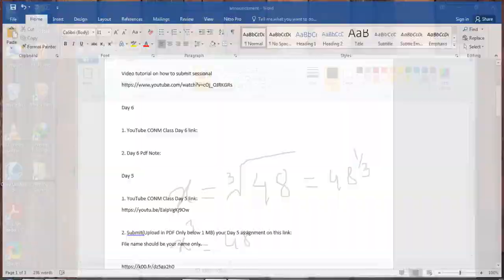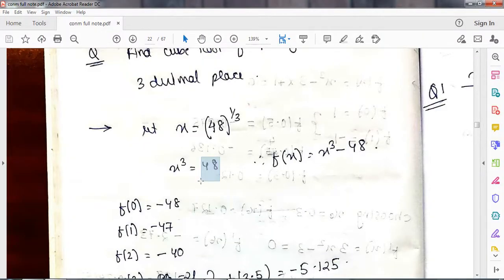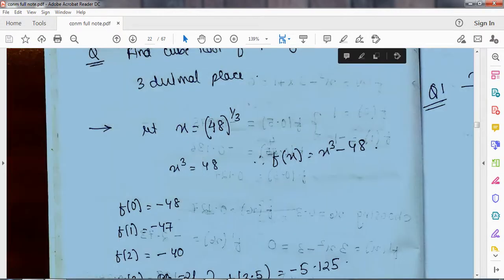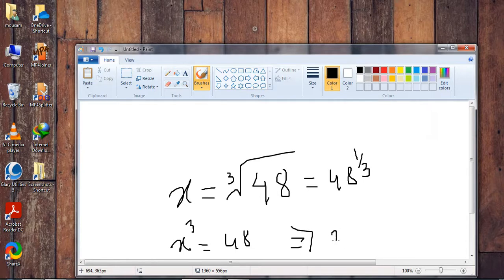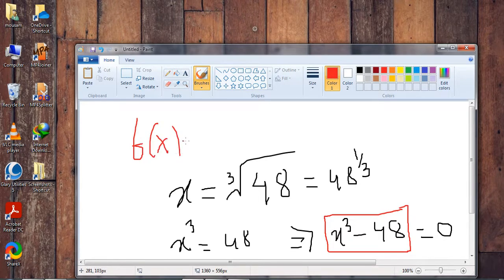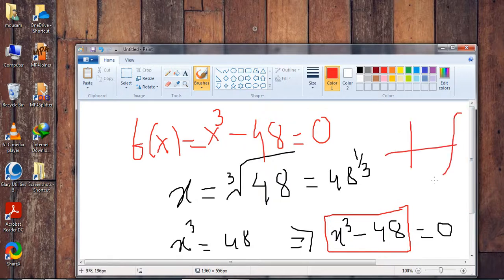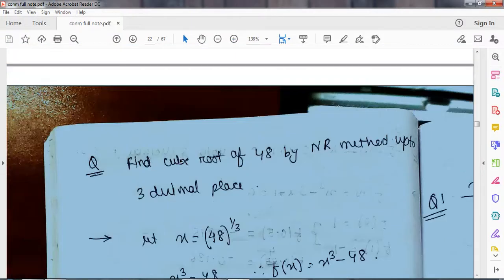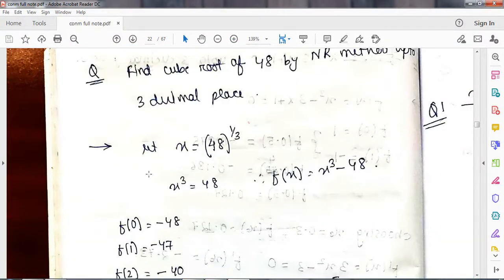Now what I have done, as I have told you, I have brought this 48 to the left hand side. So what I have done is that I have made x cube minus 48 is equal to 0. And I am telling you that this x cube minus 48 is my equation. So f of x is x cube minus 48 is equal to 0. Now my objective is to find out that value of x for which this equation becomes 0. I want to find out this value for which this equation becomes 0. So all I have done is that I have rephrased the question in a way that suits my algorithm.